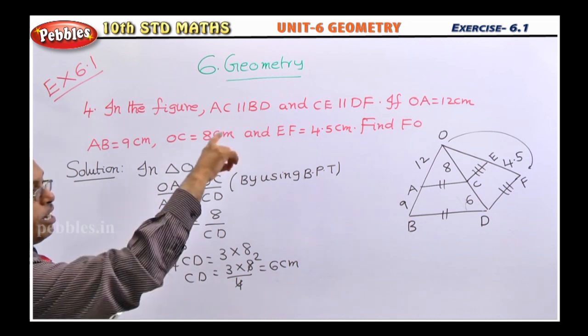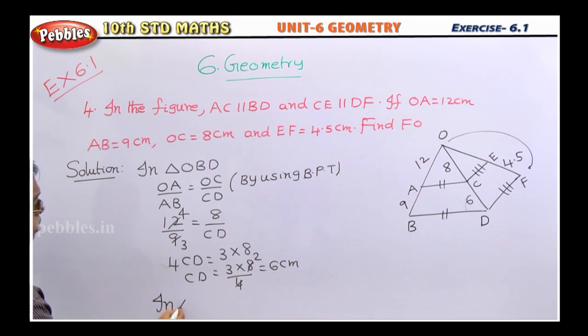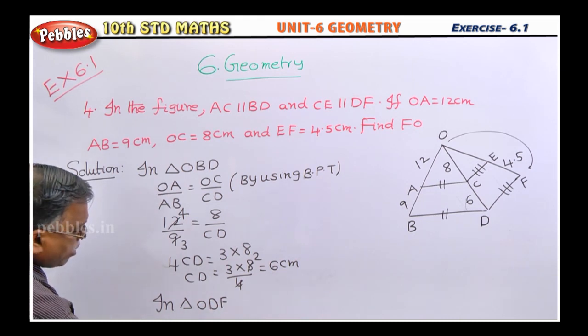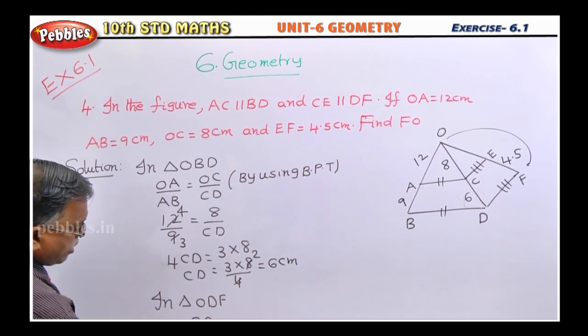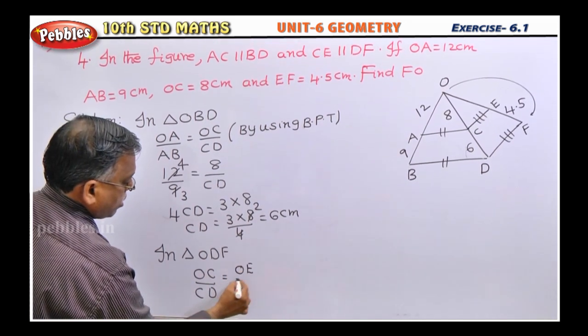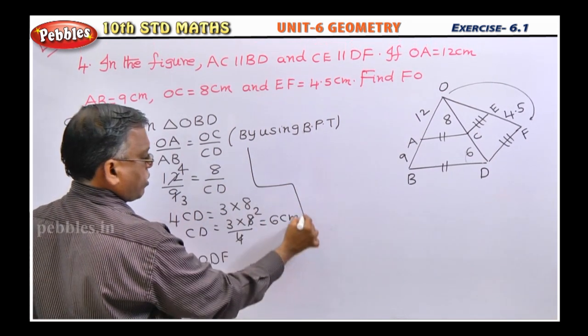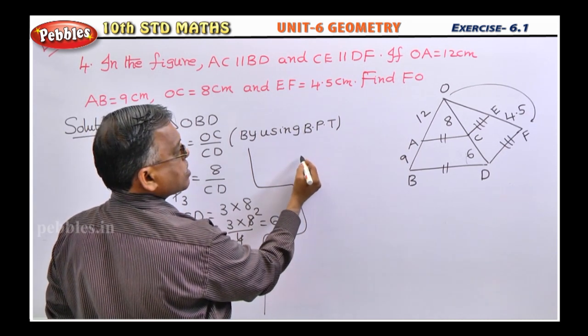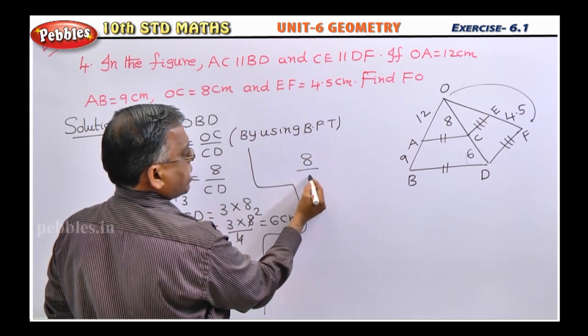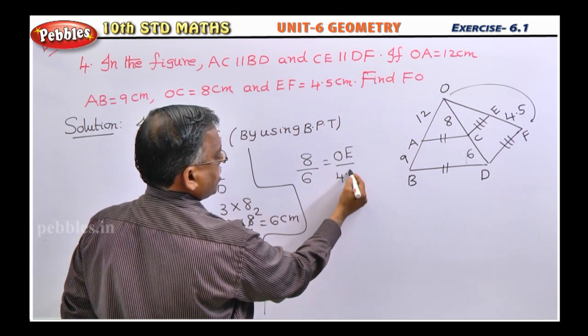Now, we can apply BPT in ODF. So, in triangle ODF, OC by CD is same as OE by EF. So, now you apply those values. OC means 8. CD is 6. We got it now. OE, we don't know. This is 4.5.